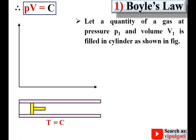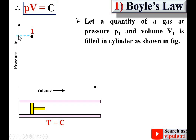Now if I draw this situation on the PV diagram, pressure is always on the y-axis and volume is always on the x-axis. This is the initial state 1. At state 1, the pressure is P1 and the volume is V1, so I can mark these on the diagram.